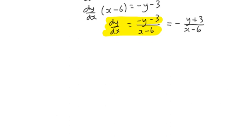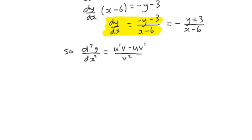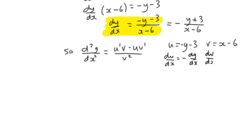The normal way to find the second derivative would be to differentiate that dy by dx expression. We have the first derivative, so the second derivative d²y by dx² would require the quotient rule since we have a fraction. The quotient rule gives u dash v minus u v dash over v squared. Here u is negative y minus 3 and v is x minus 6, so du by dx is negative dy by dx, and dv by dx is just 1.